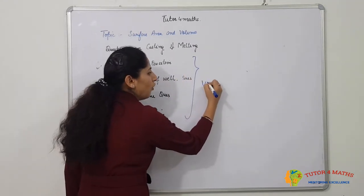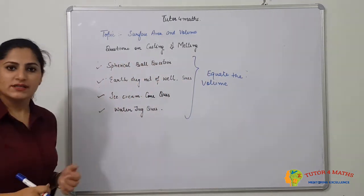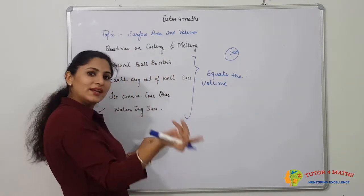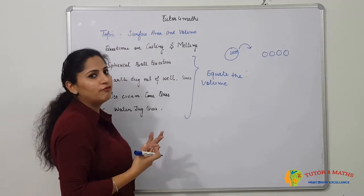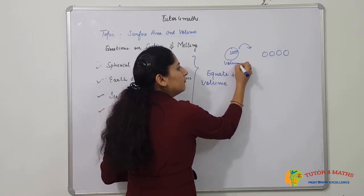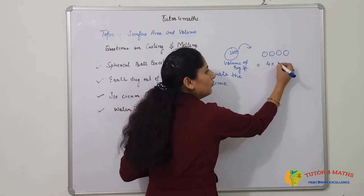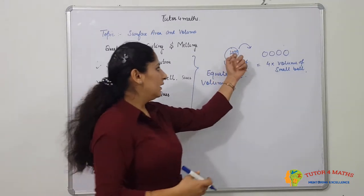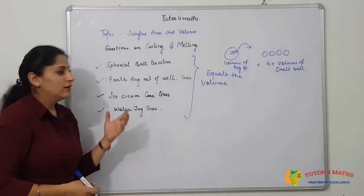In all these questions, what we have to do is equate the volume. For example, in the first question, suppose we have a bigger spherical ball of radius 10 centimeters and it is to be recasted into four small spherical balls of equal size. We need to find the radius of the smaller balls, so we equate the volumes.